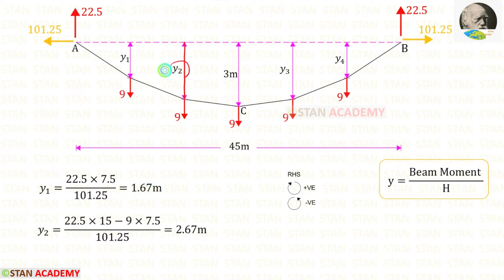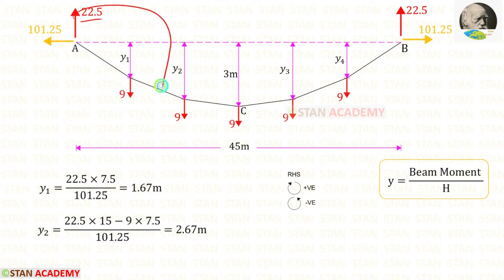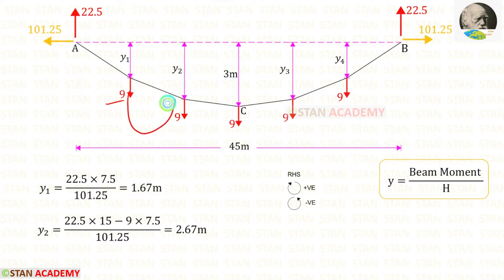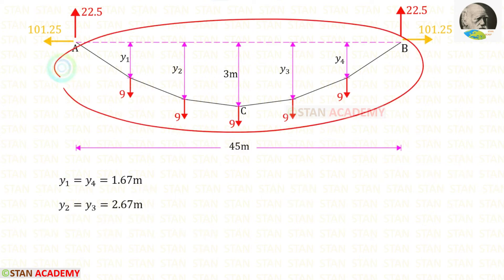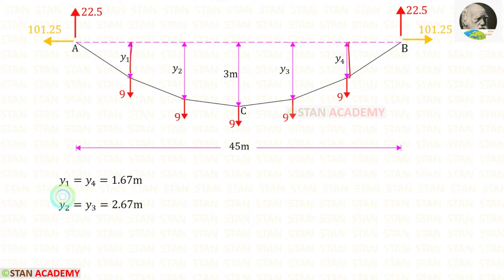Now let us find Y2. Up to this section we have the vertical reaction 22.5, acting clockwise over a distance of 15 (7.5 plus 7.5). The load acts anti-clockwise over a distance of 7.5. Finally, for Y2 we will get 2.67 meters. We know that this cable structure is symmetrical, so Y1 and Y4 will be the same and Y2 and Y3 will be the same.